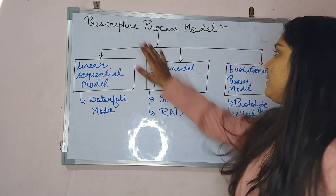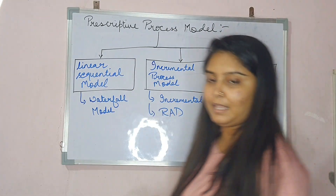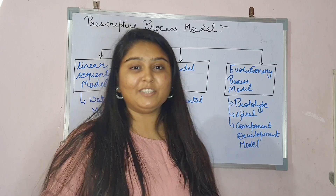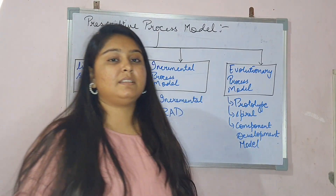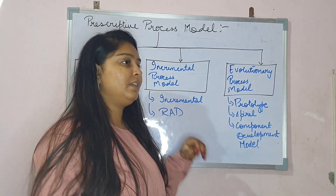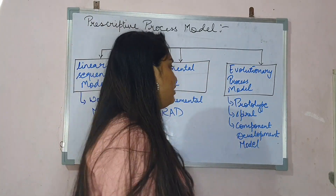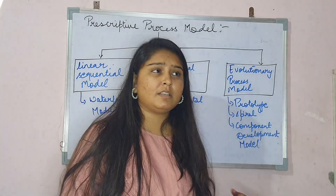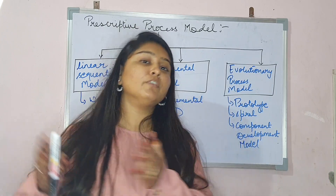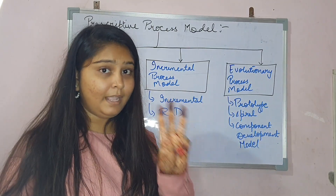The prescriptive process model divides into three paths. Number one is the linear sequential model — everything goes in sequence. Then comes the incremental process model, which may have increments one after another. And third is the evolutionary process model, which has evolved from something we will learn in the next few videos.